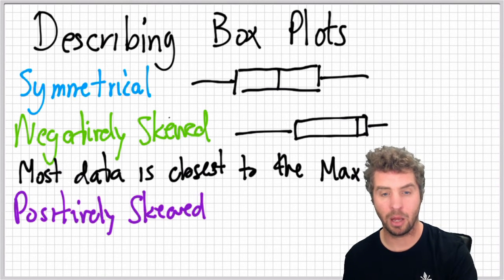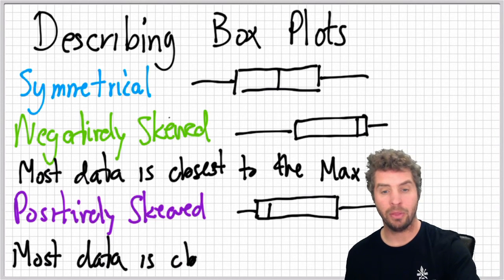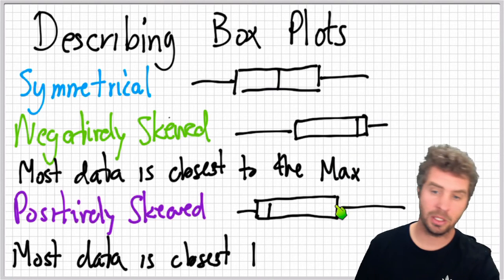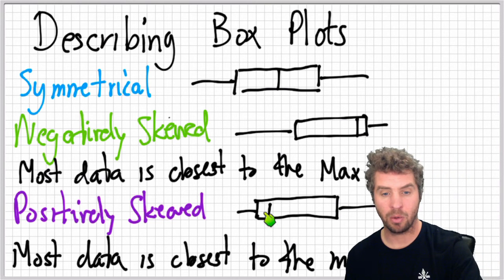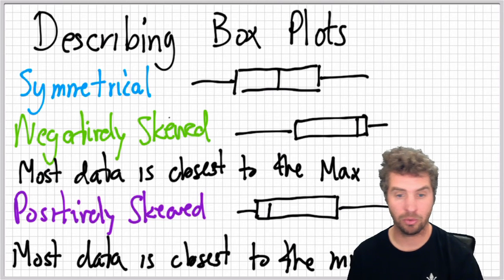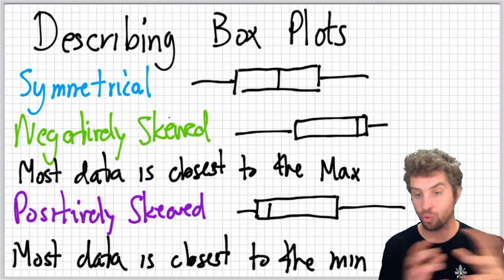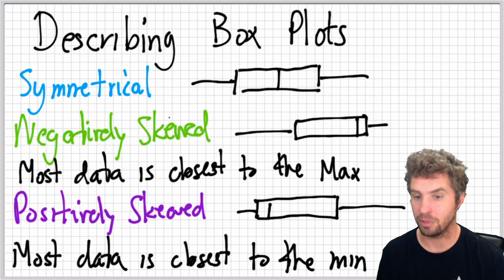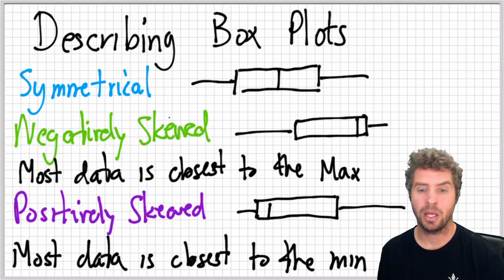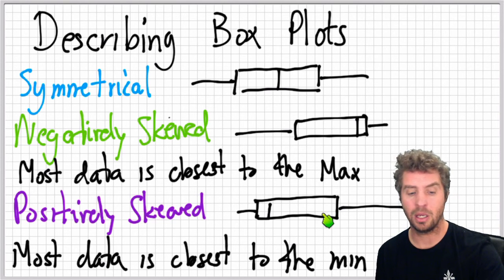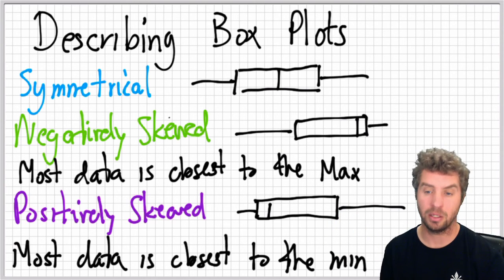So positively skewed is the opposite. The data is mostly gathered around the minimum or closer to the minimum, and the spread is up here near the maximum. So the median and quartile one are close and then that's close to the minimum and so on and so forth. The data groups closer to the minimum on a positively skewed graph. So it might feel like those are kind of oppositely named. But if you think about it as that the name talks about where the biggest spread of data is, right?